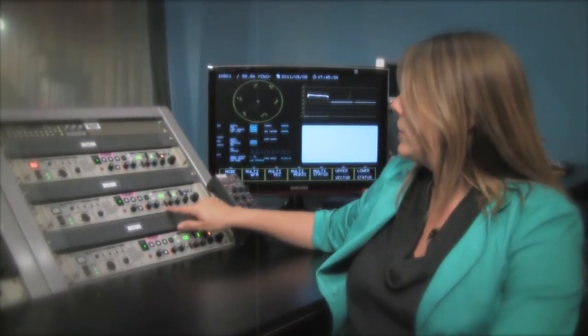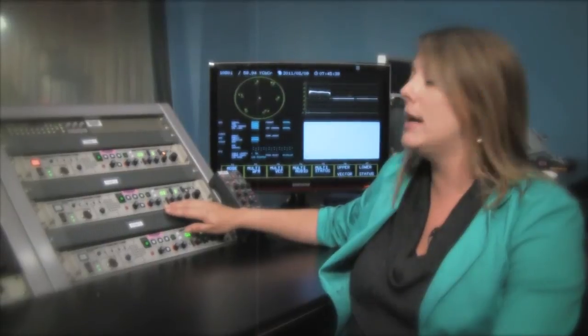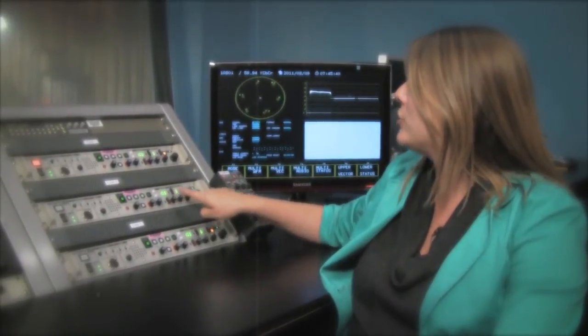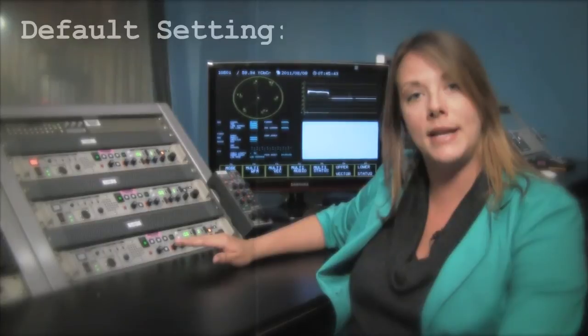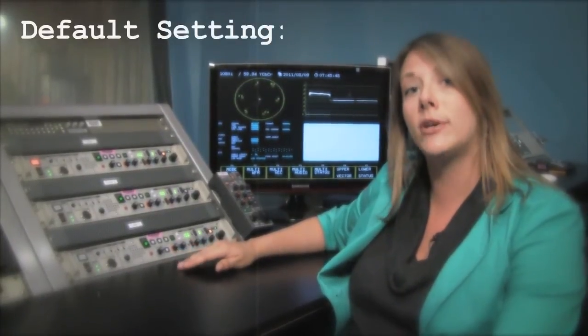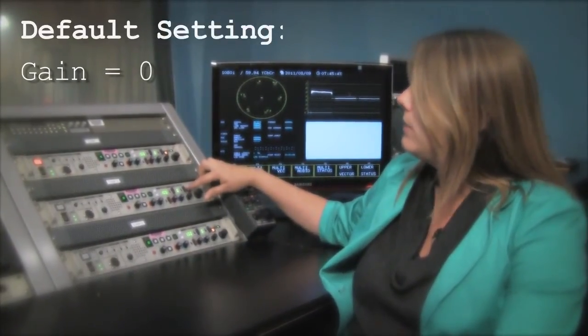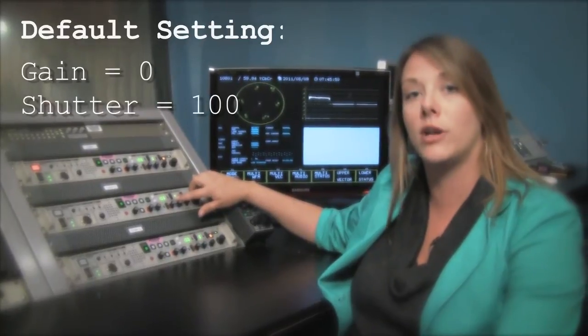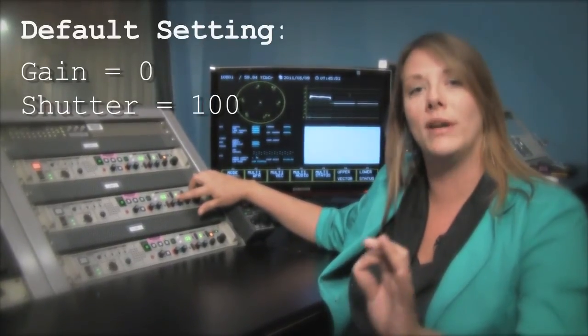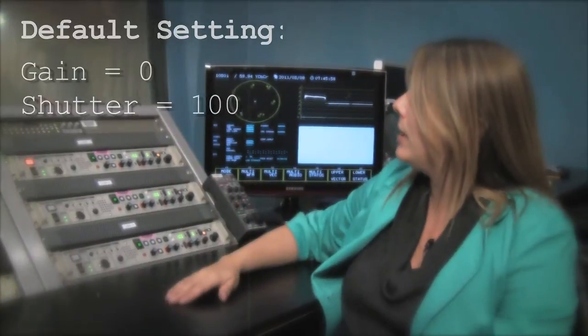The other things that we can adjust on here include our reds and blues. In addition to this, we also have our shutter speed and master gain. The default setting in this studio should always have our gain set at zero and our shutter set at 100. It's actually one one-hundredth of a second.